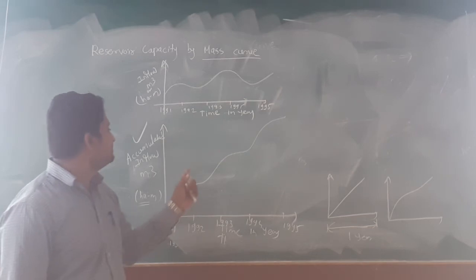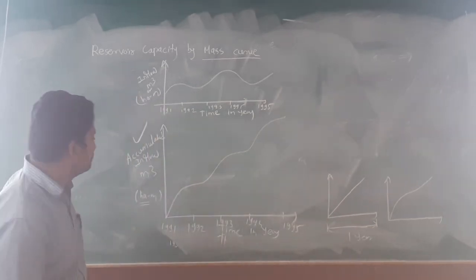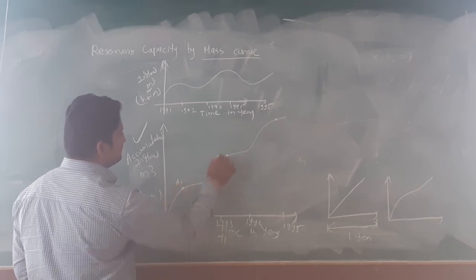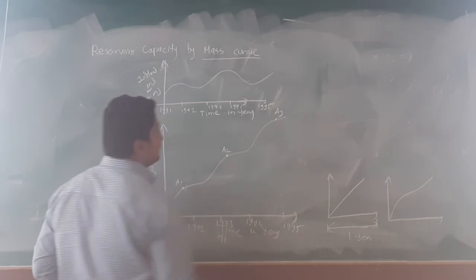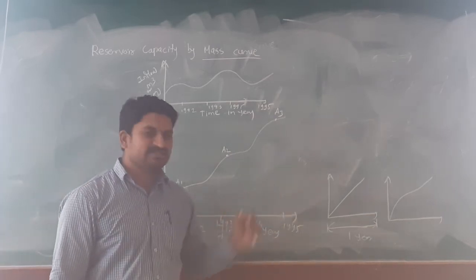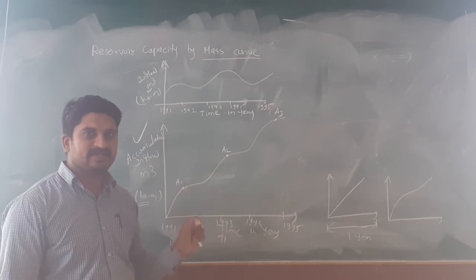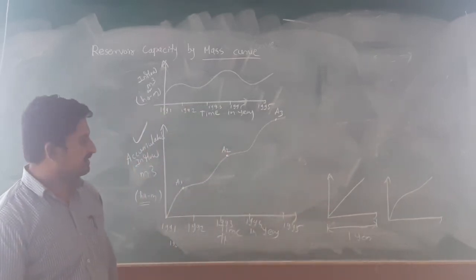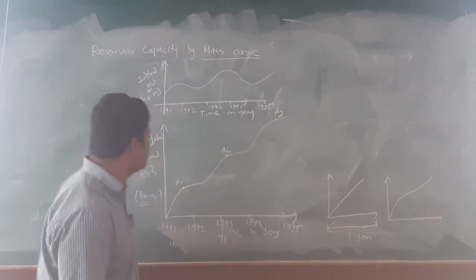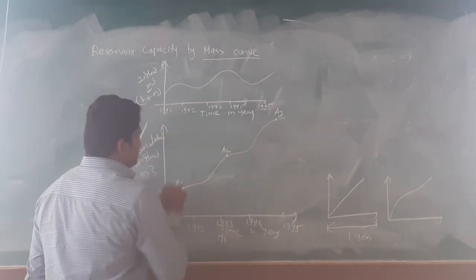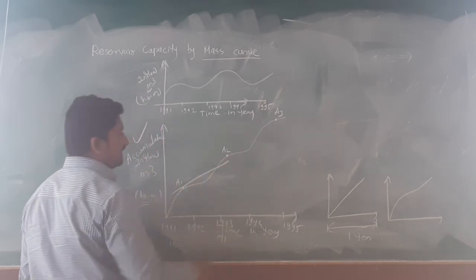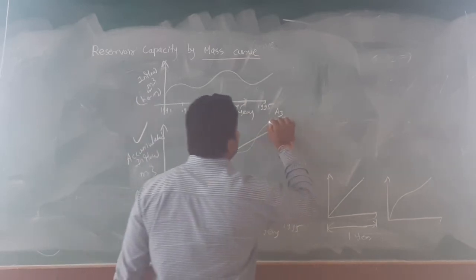To calculate the reservoir capacity, we use both the mass curve and the demand curve. First, mark the highest points of the mass curve — suppose these highest points are A1, A2, and A3. Next, draw tangents from these highest points A1, A2, and A3, where each tangent is parallel to the demand curve. For calculation purposes, we consider the demand curve as a straight line, meaning we get constant discharge from the reservoir. So we draw tangents parallel to the demand curve from each highest point — this is the first tangent, the second tangent, and the third tangent.